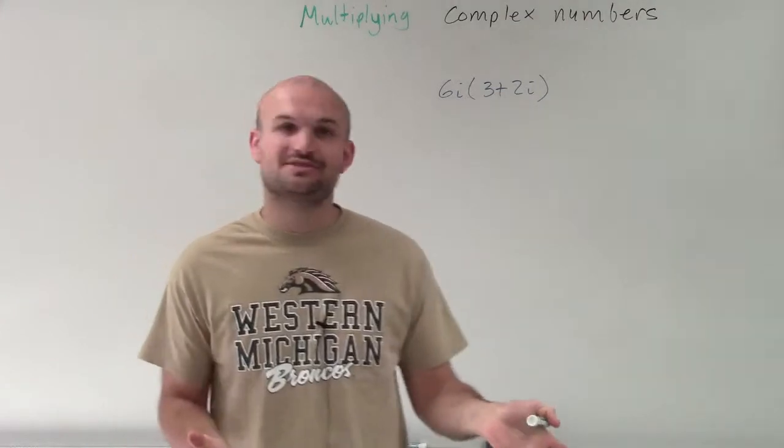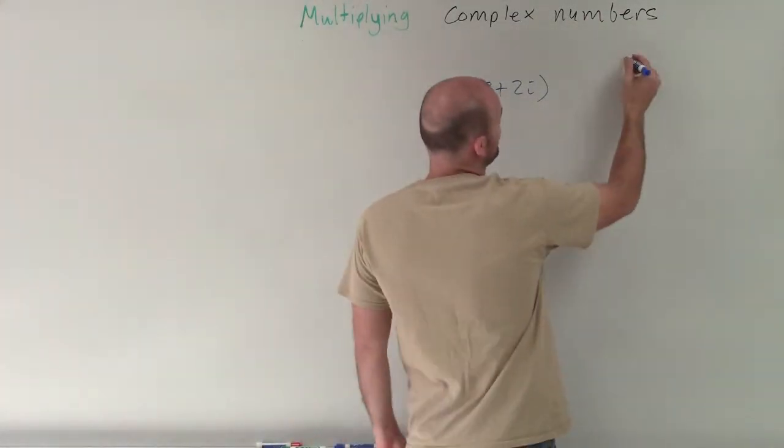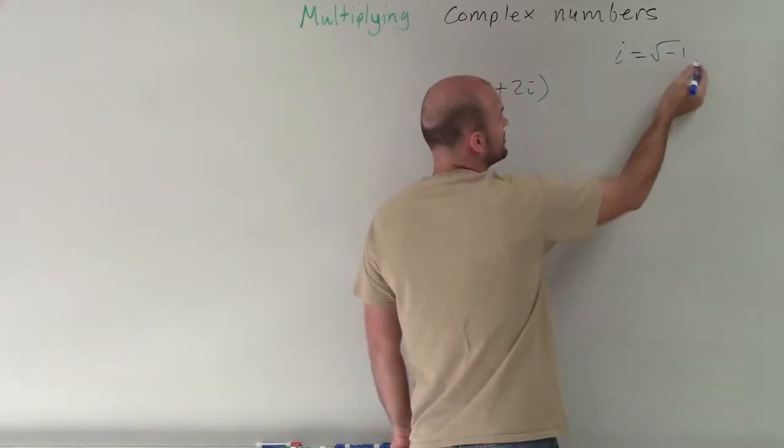Multiplying complex numbers is just like multiplying anything, except, as I mentioned before, our imaginary unit i represents the square root of negative 1.